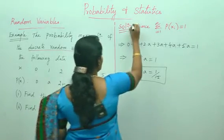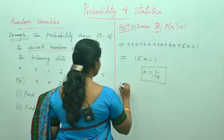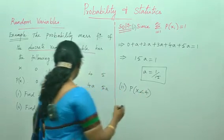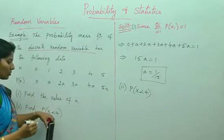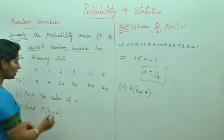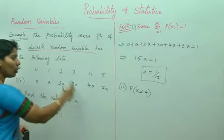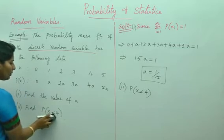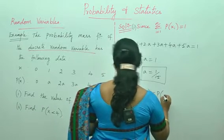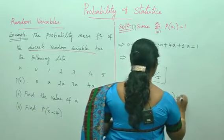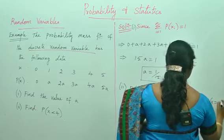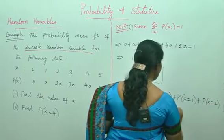Now this is question number 1 done. The second one: find P(X < 4). They have given P(X) strictly less than 4. Strictly less than means you should not go beyond that. If it is less than or equal to, then along with 4 you would take it. But here it is strictly less than, so the possibilities are: P(X=0) plus P(X=1) plus P(X=2) plus P(X=3).